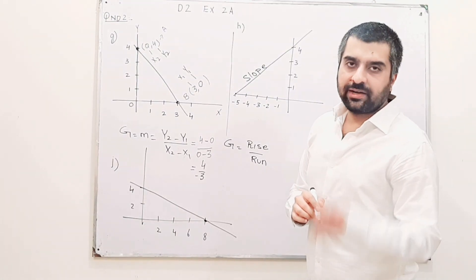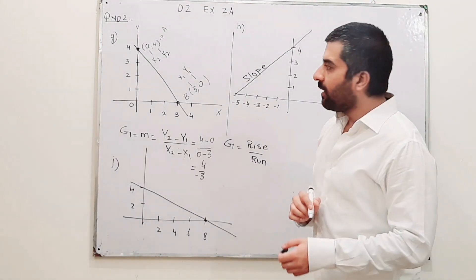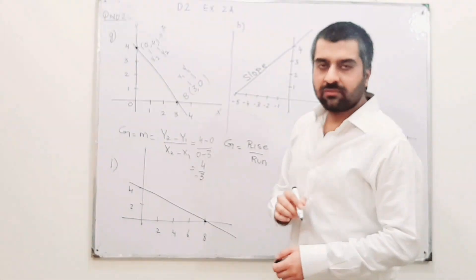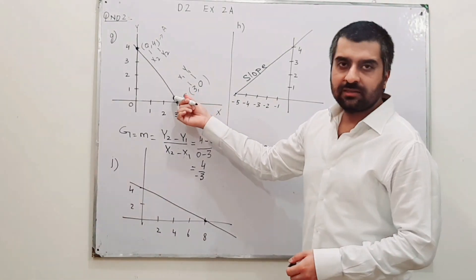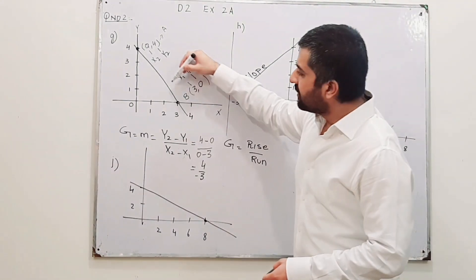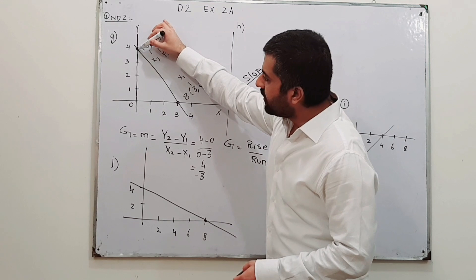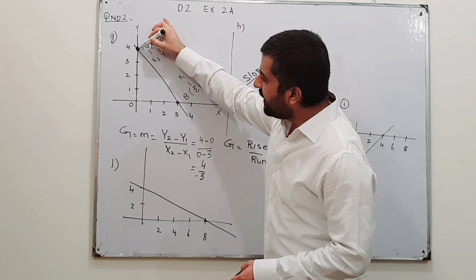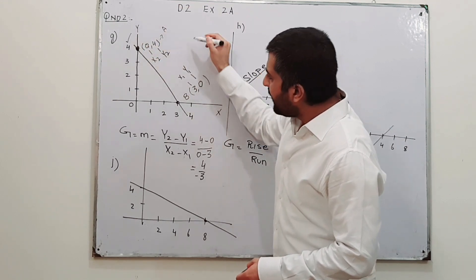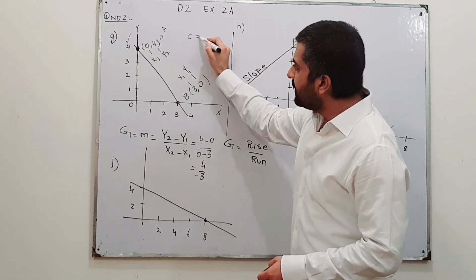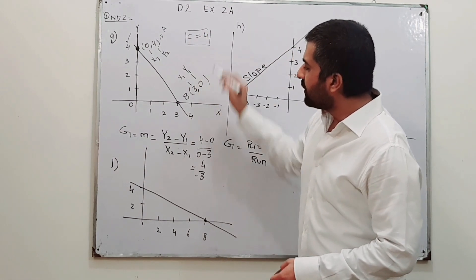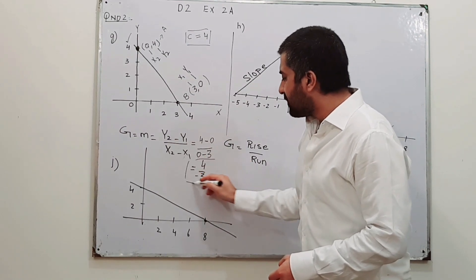What is the y-intercept? The y-intercept is the point where this line is intersecting the y-axis. This line is intersecting the y-axis at this point, and at this point the value for y is 4. So y-intercept, represented by c, is 4. This is the answer for this part.